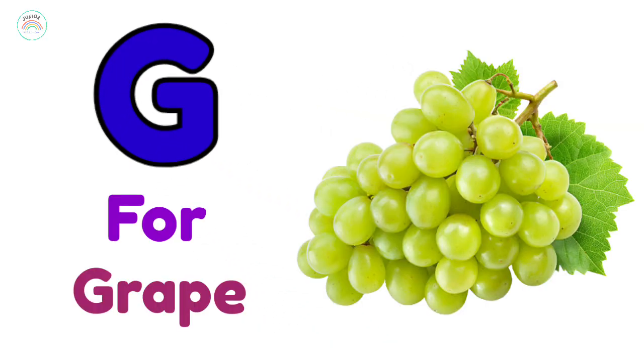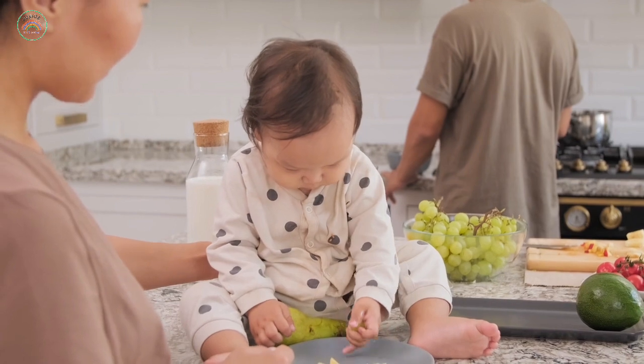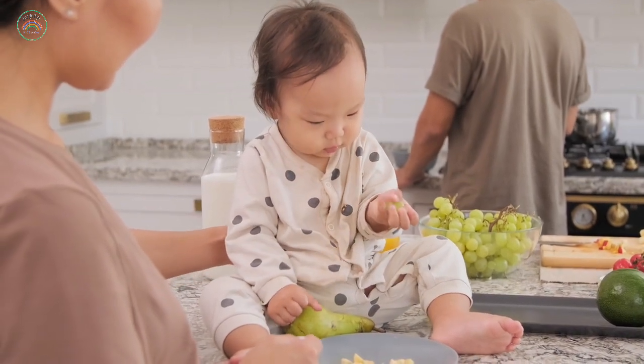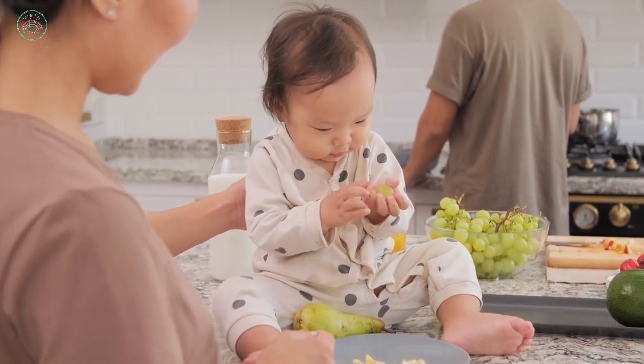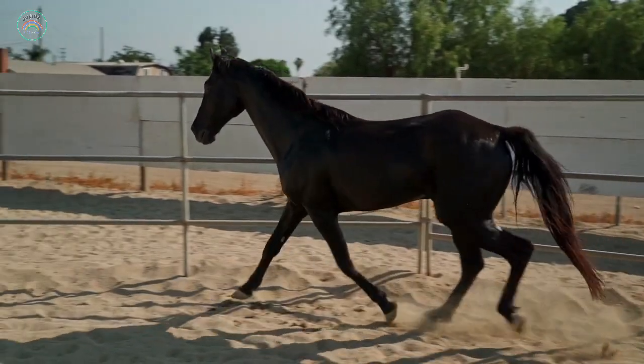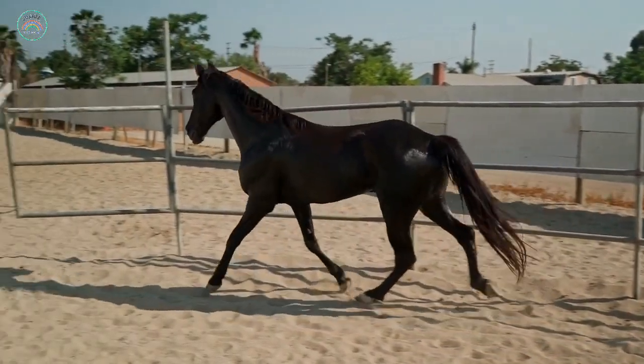G for grapes, yani amgur. H for horse, yani ghodi.